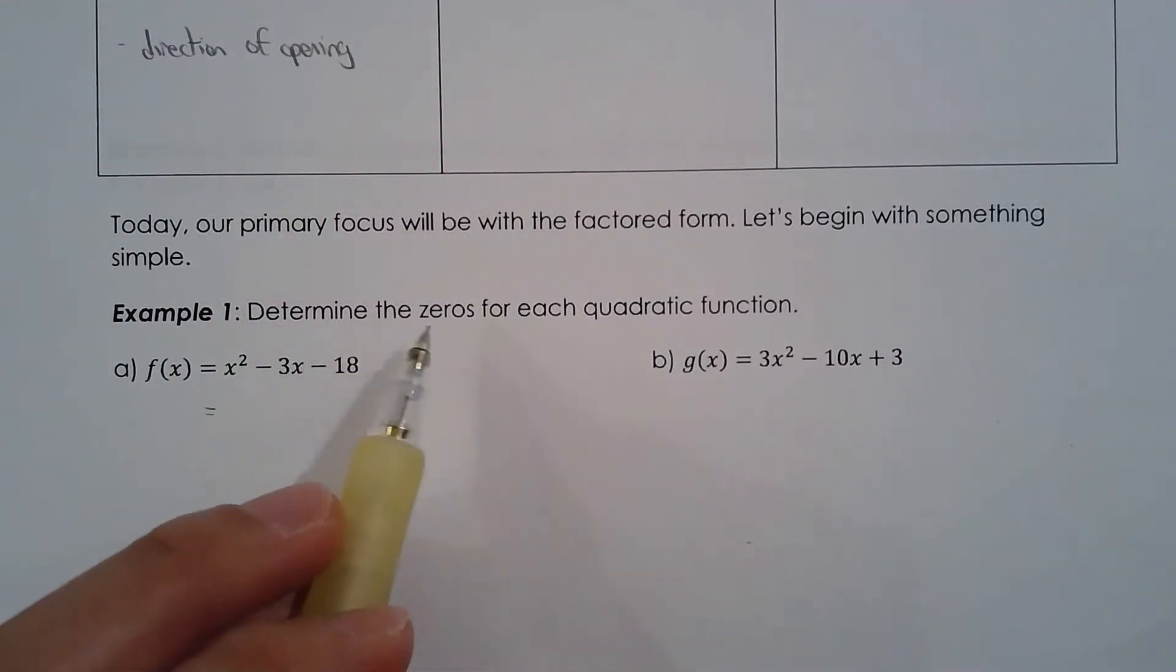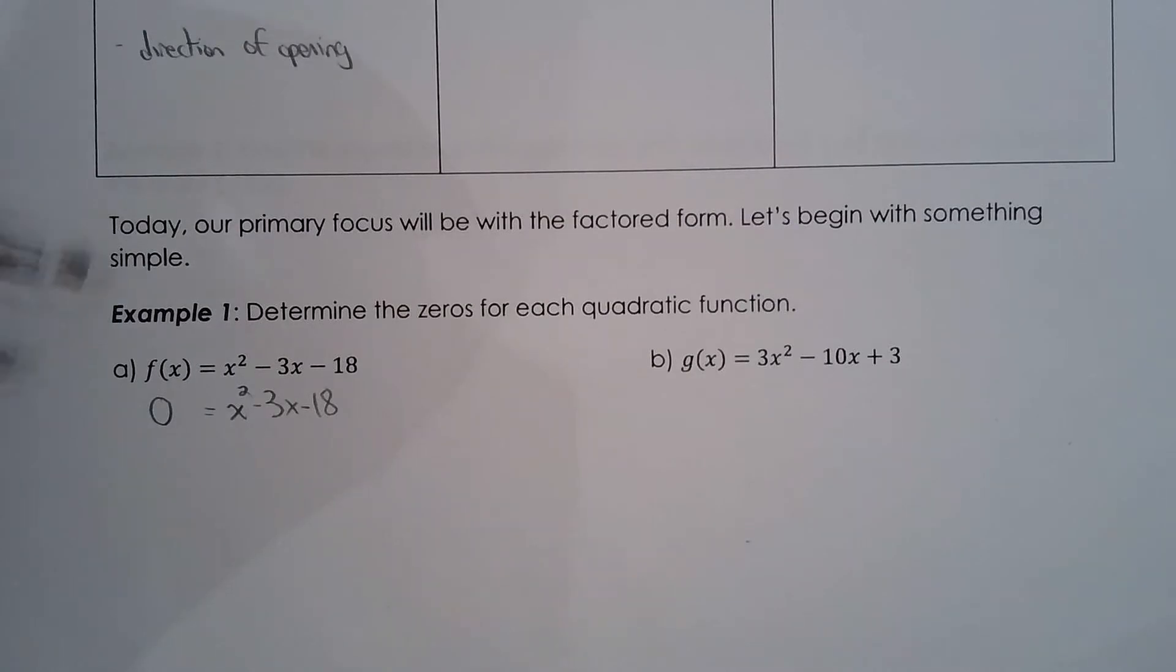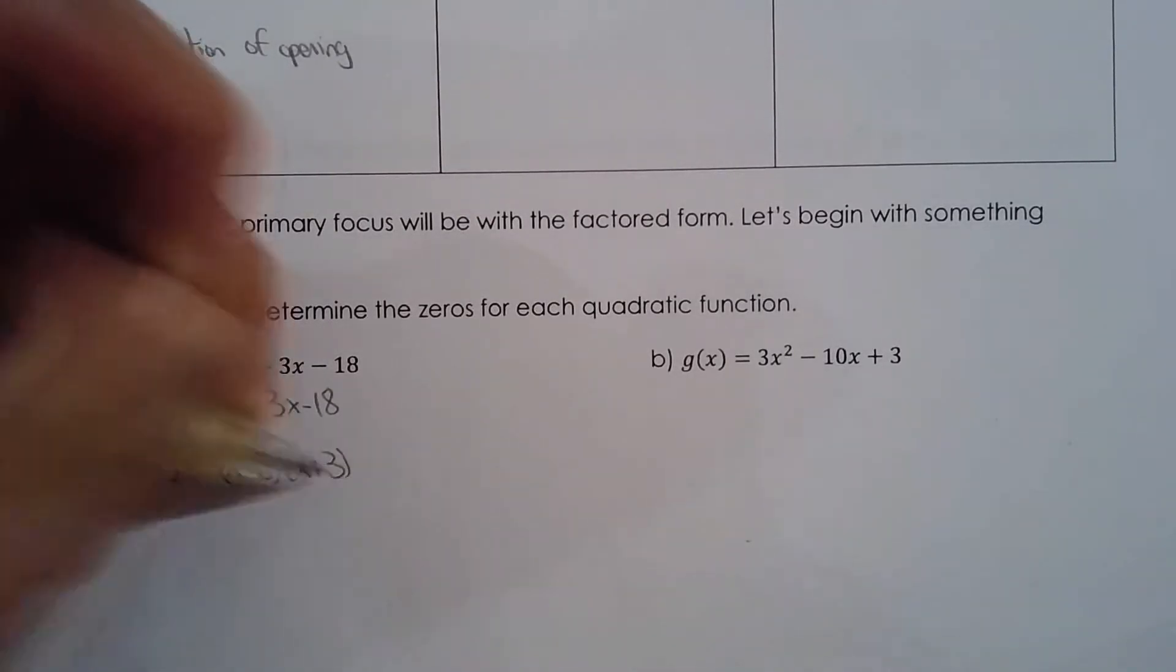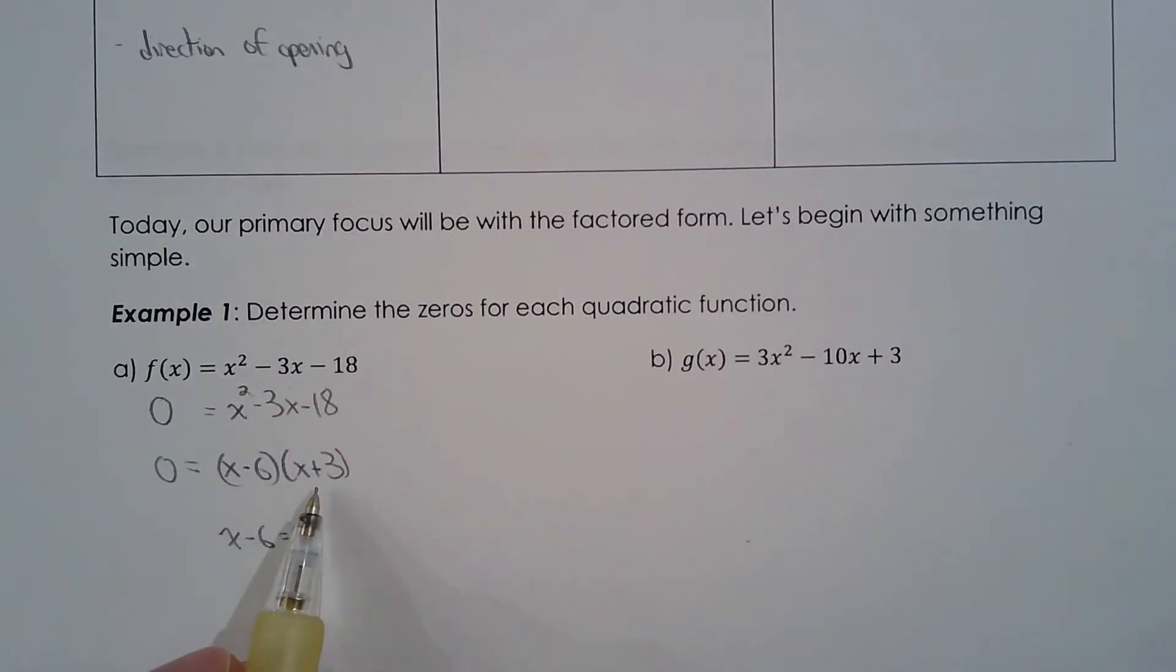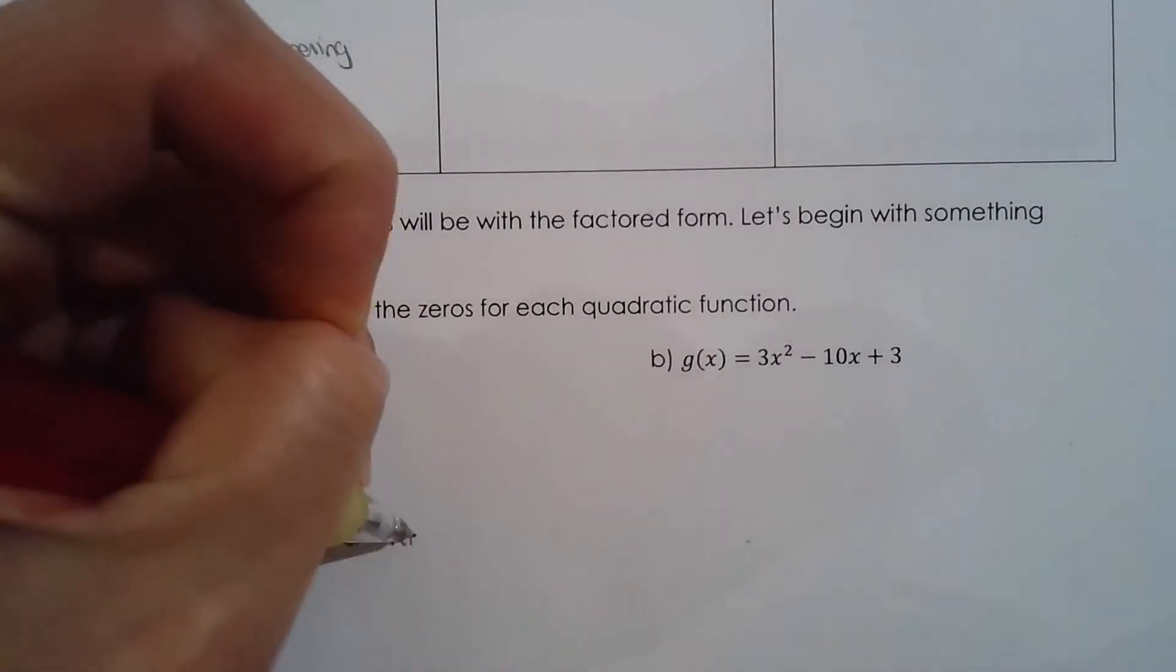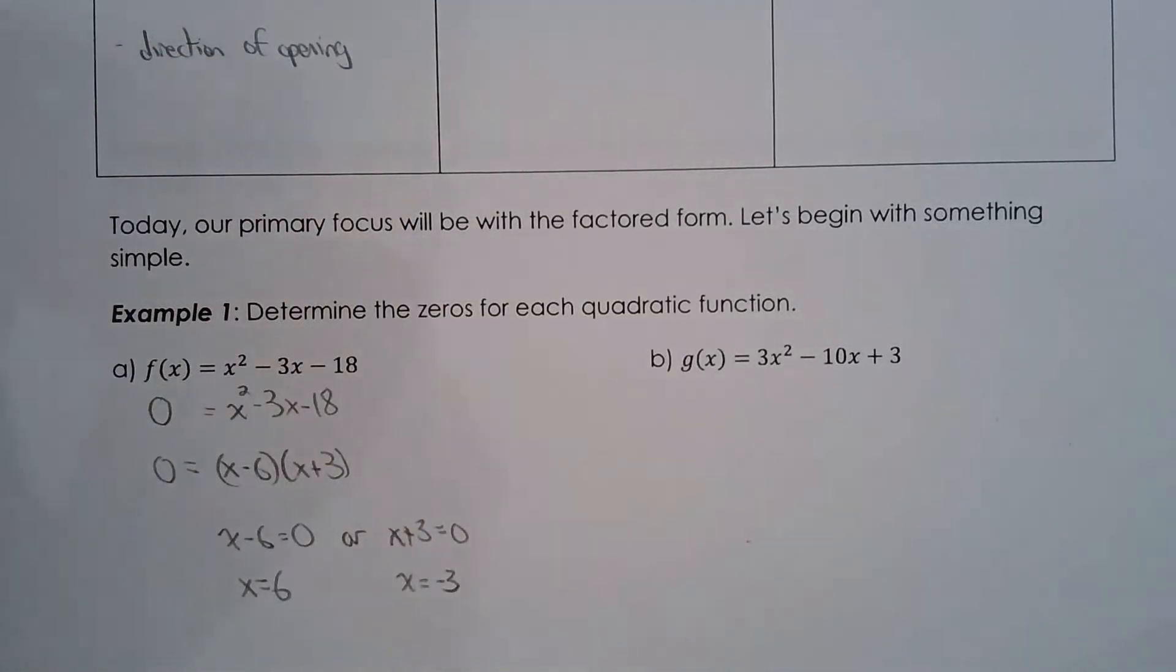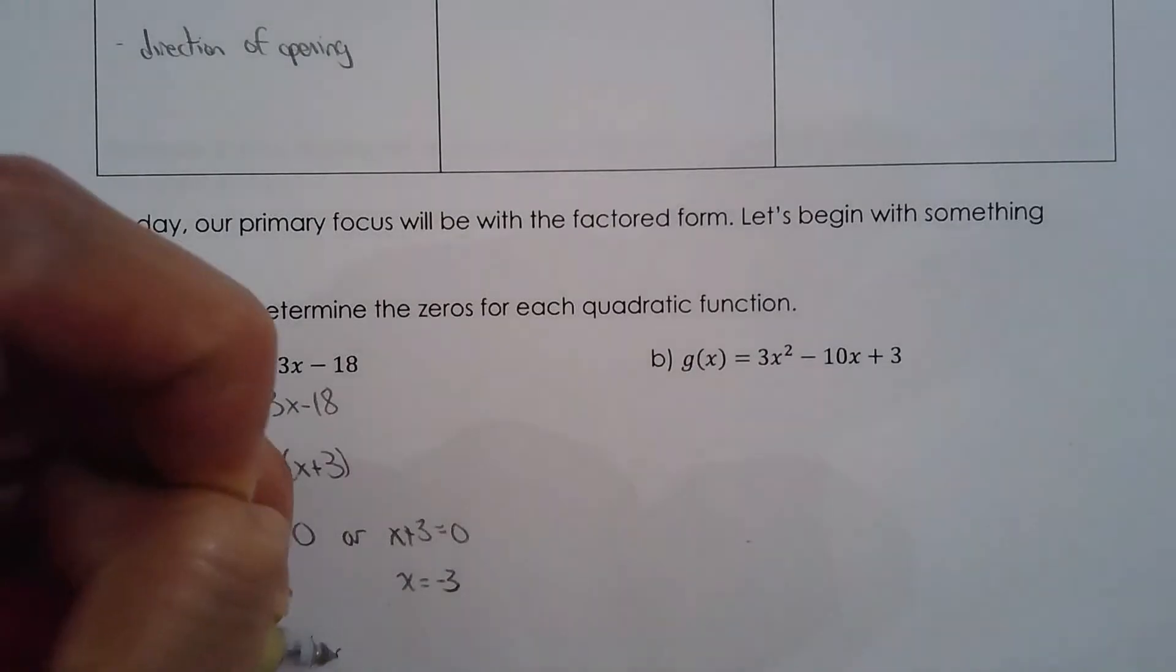Before I do that, I want you to remember what zeros mean. Zeros mean values of x which make the function equal to zero. So what values of x will make the function f(x) equal to zero? I can't tell when x² - 3x - 18 is equal to zero. But what I can do is I'm going to factor. And now that I have it factored, I can apply the zero product property because if either of these factors are equal to zero, then the product will be zero. So when is x - 6 equals zero? When x is equal to 6. When is x + 3 equals zero? When x is equal to negative 3. So the zeros are 6 and negative 3.